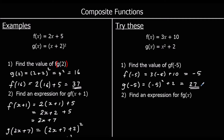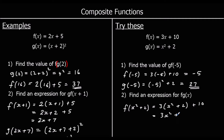Question 2: find an expression for fg of x — putting g into f. So it's f of (x squared plus 2), which is 3 times (x squared plus 2) plus 10. That gives 3x squared plus 6 plus 10, which is 3x squared plus 16.